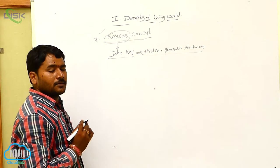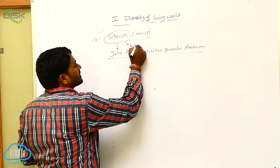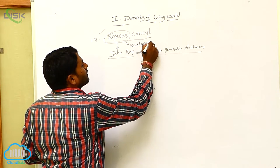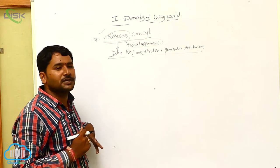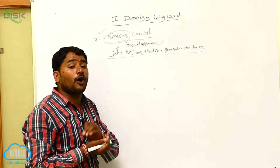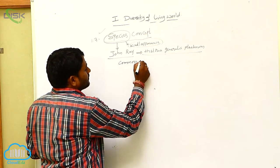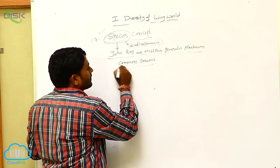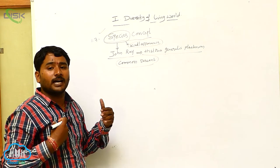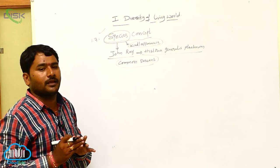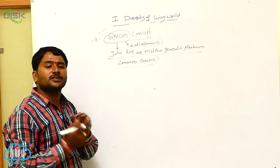John Ray was the first scientist to use the word species. The meaning of the word species is 'kind or appearance.' He defined species on the basis of common descent — meaning the group of individuals who share common ancestry are called a species.